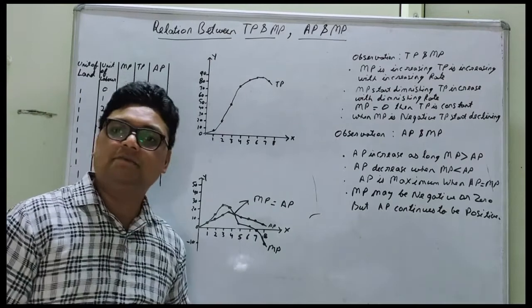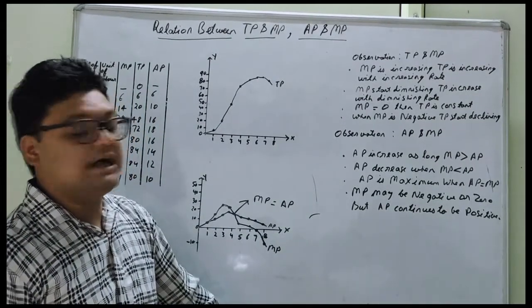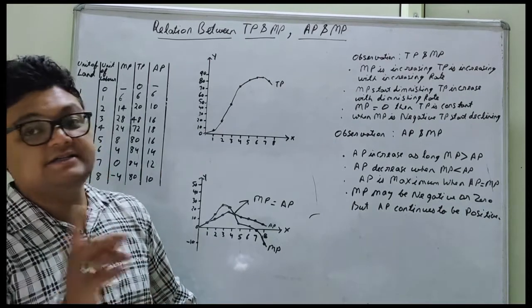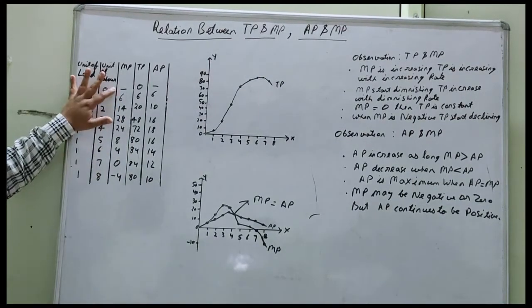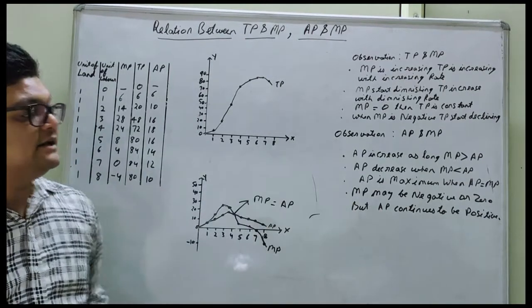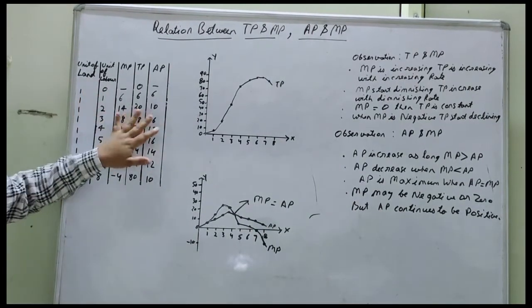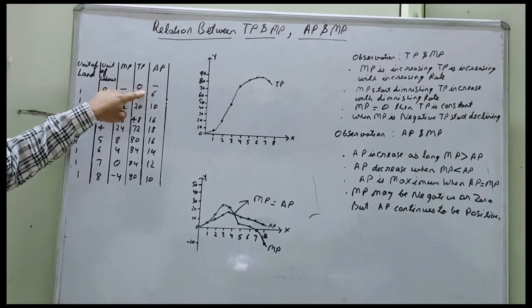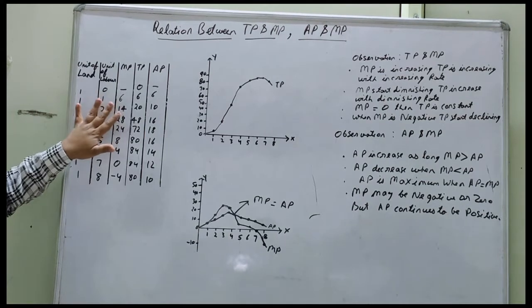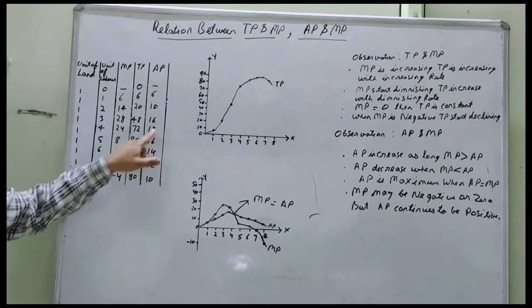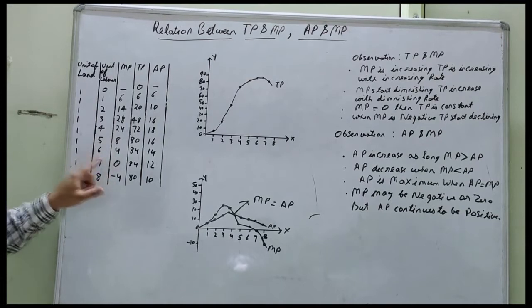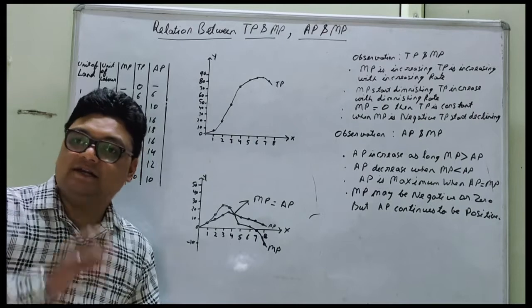Now let us look at the relationship between average product and marginal product. First: AP increases as long as marginal product is greater than AP. For example, when MP is 6, 14, 28, 24 and AP is 6, 10, 16, 18 — MP is greater than AP, so AP is increasing. Second: AP decreases when marginal product is less than AP. After AP reaches 18, it declines to 16, 14, 12, 10 because MP is now 8, 4, 0, minus 4, which is less than AP — that is why average product is declining.